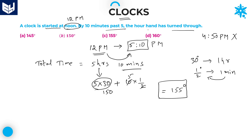Therefore, the hour's hand will turn through 155 degrees. Option C is the right answer for this question. That is the reason why I already told you — if you know these key facts regarding the hour's hand and minute's hand, then it is very easy to get the answers without much difficulty. Let's go to the next question.